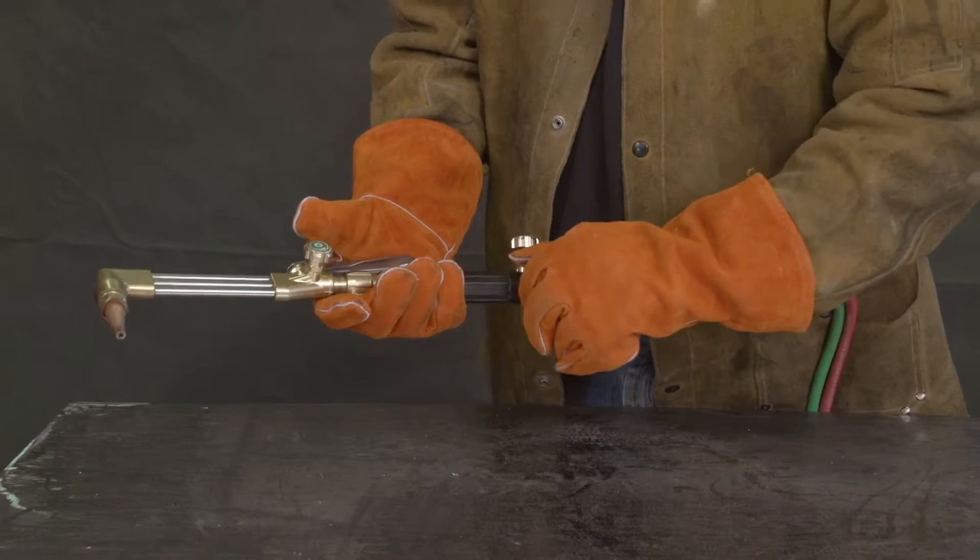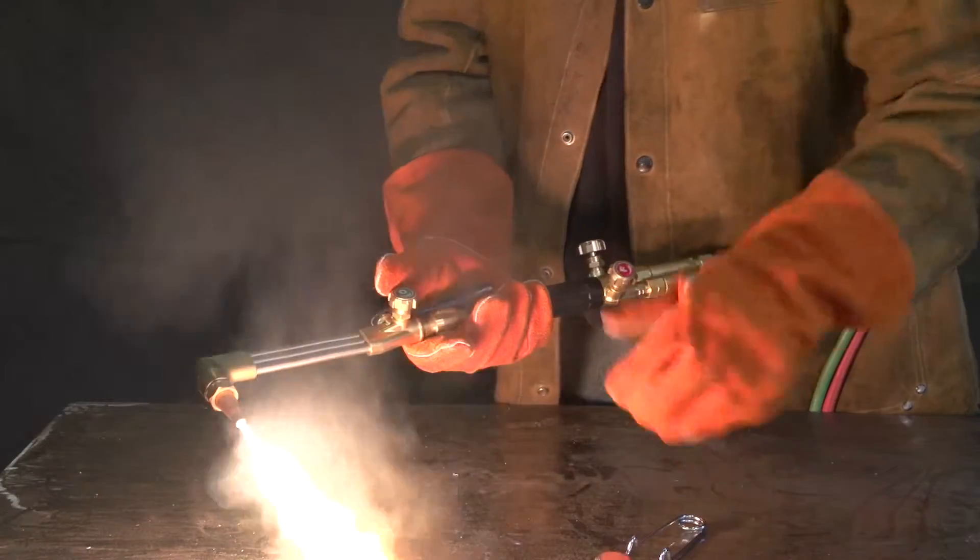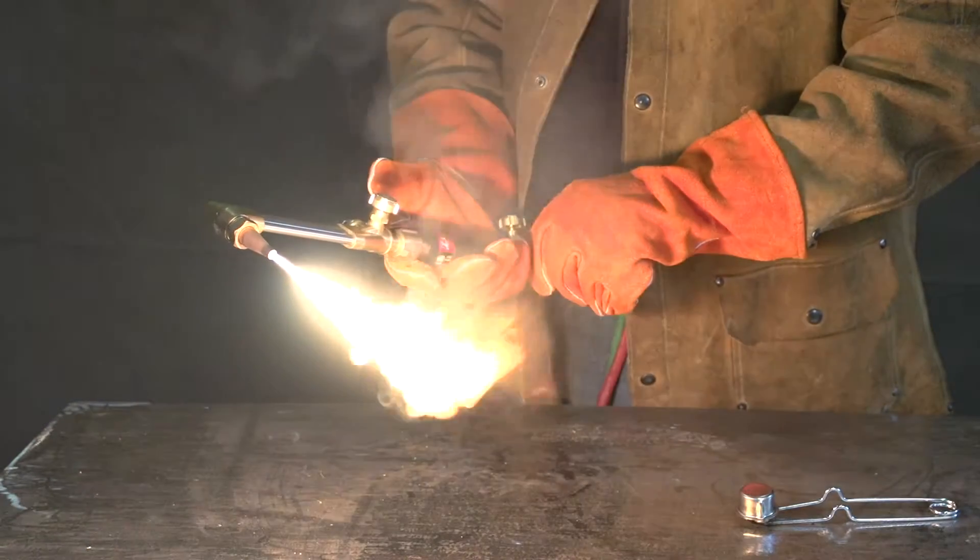To light the torch, open the fuel valve one-eighth of a turn and ignite the gas using a spark lighter. Continue opening the fuel valve until the smoke and soot disappear.